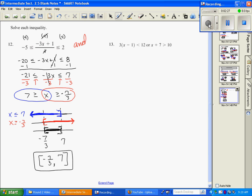Number 13, I'm going to do the same thing. We're going to solve. It's going to be 3x minus 3 is less than 12. I'm going to solve this one out.